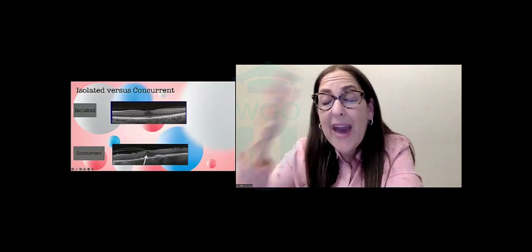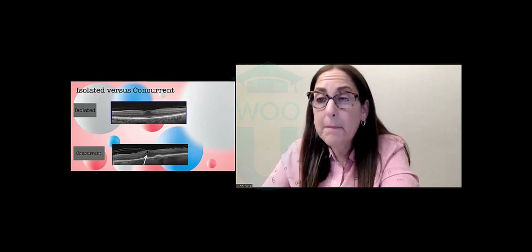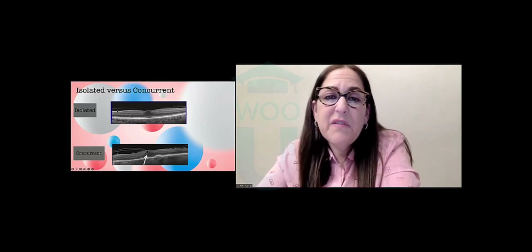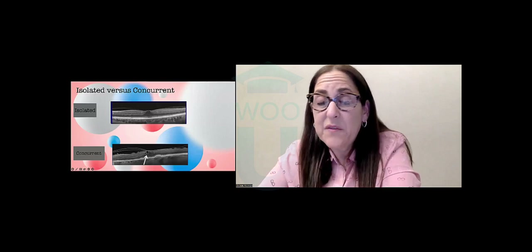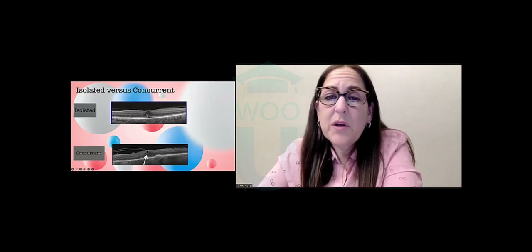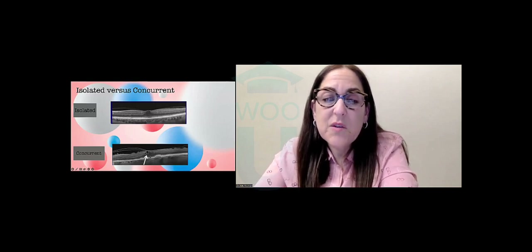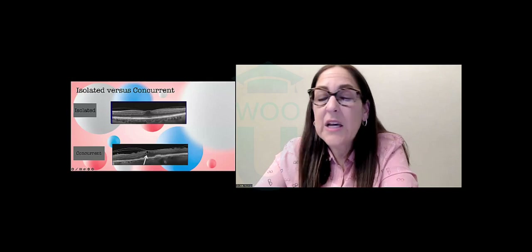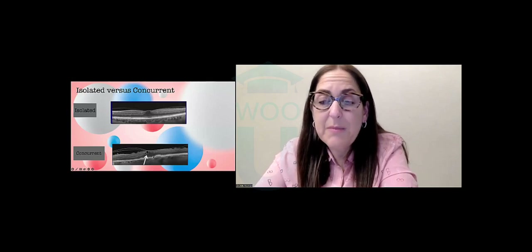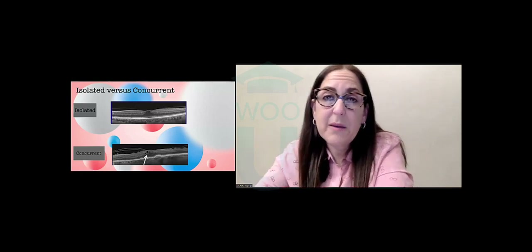The other way we categorize VMT is by looking at size and then what I call the company that the VMT keeps. If the VMT is happening by itself, nothing else is happening, it's called isolated — so this one I would call focal isolated VMT. The one on the bottom has a little abnormality, so I would call that broad concurrent VMT because there are other disease processes happening simultaneously.